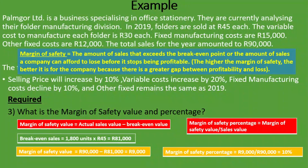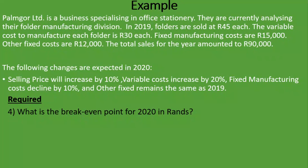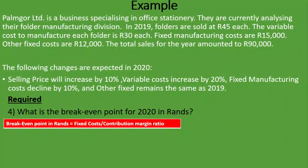The fourth requirement asks: what is the break-even point for 2020 in Rands? We are told the following changes are expected in 2020: selling price will increase by 10%, variable costs increase by 20%, fixed manufacturing costs decline by 10%, and other fixed costs remain the same as 2019. The break-even point in Rands equals total fixed costs divided by the contribution margin ratio. Let's calculate the selling price per unit, variable cost per unit, contribution per unit, and fixed costs taking into account these 2020 changes.